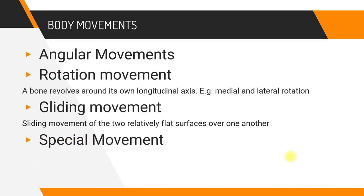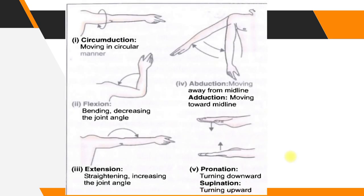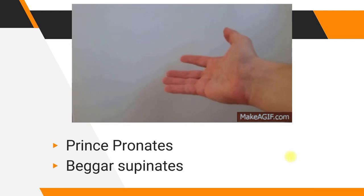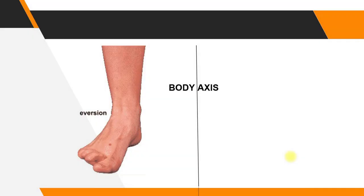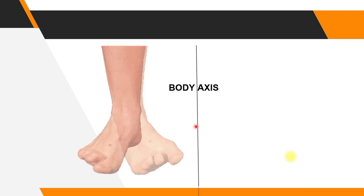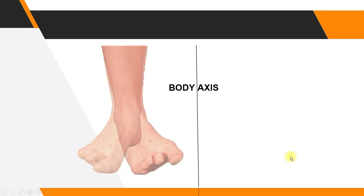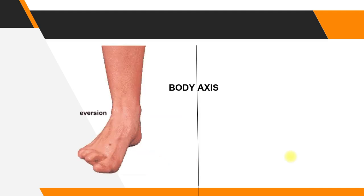Movements will be discussed in more detail in the next lecture on joints. To help remember supination and pronation: one professor said a prince pronates and gives a blessing to the people — that blessing hand position is called pronation. Conversely, a beggar supinates — that position is called supination. For eversion and inversion: imagine a line through the center of the body — movement going outward from the axis is eversion, revealing the plantar surface, while inversion is the opposite.